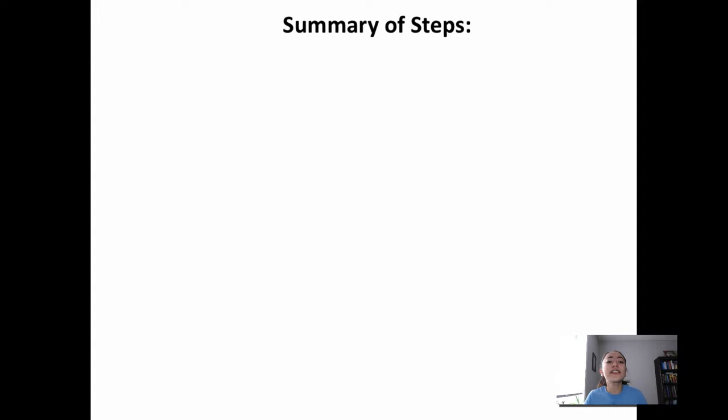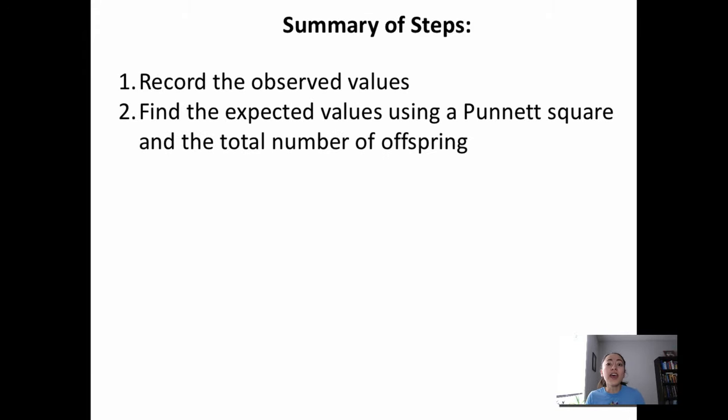Below is a summary of the steps you need to follow when doing a chi-square test. First, you need to record the observed values. Then, you have to find the expected values using a Punnett square. Remember, you will multiply the probabilities you get using the Punnett square by the total number of observed offspring in order to get those expected values.